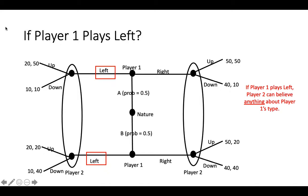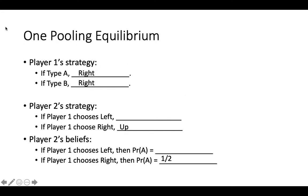In a pooling equilibrium, if player 1 plays left, player 2 can hold any beliefs about player 1's type. So, if player 2 believes that player 1 is type A, they should play up. If they believe that player 1 is type B, they should play down. If they believe, for example, that there is a 10% chance that player 1 is type A and a 90% chance that player 1 is type B, player 2 should also play down. All of these beliefs are consistent with player 1 playing left, and as long as player 2 chooses an optimal action consistent with these beliefs, player 2's strategy is part of the pooling equilibrium. One possible pooling equilibrium has player 2 believing that the probability that player 1 is type A is 10% and playing down when player 1 plays left.